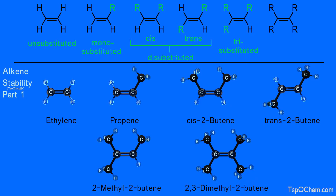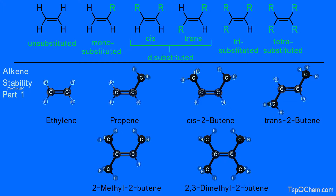And finally, 2,3-dimethyl-2-butene is an example of a tetrasubstituted alkene — a tetrasubstituted alkene has four alkyl groups bonded to it. Let's turn those R groups' color on the top line drawing to green. From heats of hydrogenation measurements, we know that the more alkyl groups around the carbon-carbon double bond, the more stable the alkene. So to show that general trend, let's rank the top line structures from the least stable alkene on the left to the most stable alkene on the right.